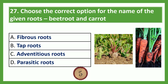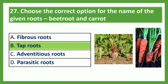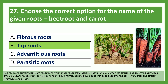Choose the correct option for the name of the given roots — beetroot and carrot. Option A: fibrous roots; Option B: tap roots; Option C: adventitious roots; Option D: parasitic roots. The answer is Option B, tap roots. Tap roots are primary dominant roots from which other roots grow laterally. They are thick, somewhat straight and grow vertically deep into soil. Mustard, beetroot, parsley, coriander, radish, turnip and carrots all have tap roots.